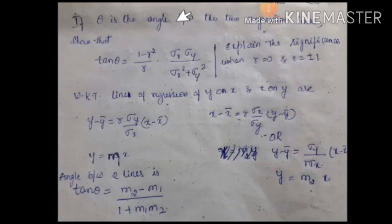Another type of problem we come across in regression lines is when theta is the angle between two regression lines. We need to show that tan theta equals (1 minus r squared) by r times sigma x by sigma y, divided by (sigma x squared plus sigma y squared), and explain the significance when r equals 0 and r equals plus or minus 1. This is one of the important derivations in regression lines.